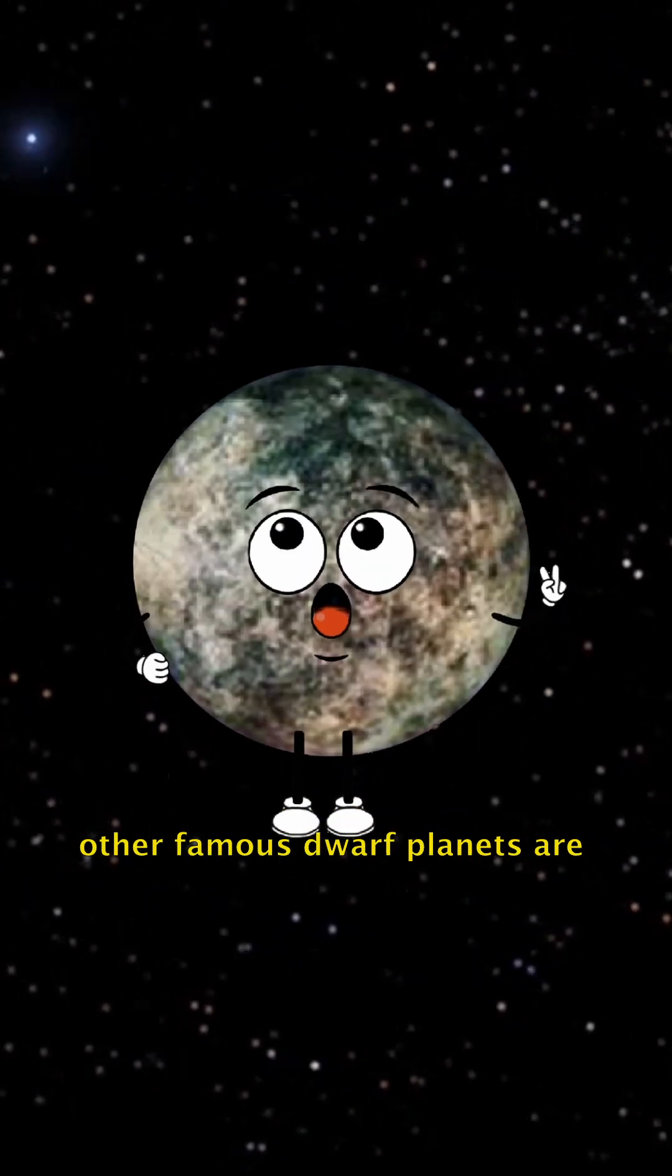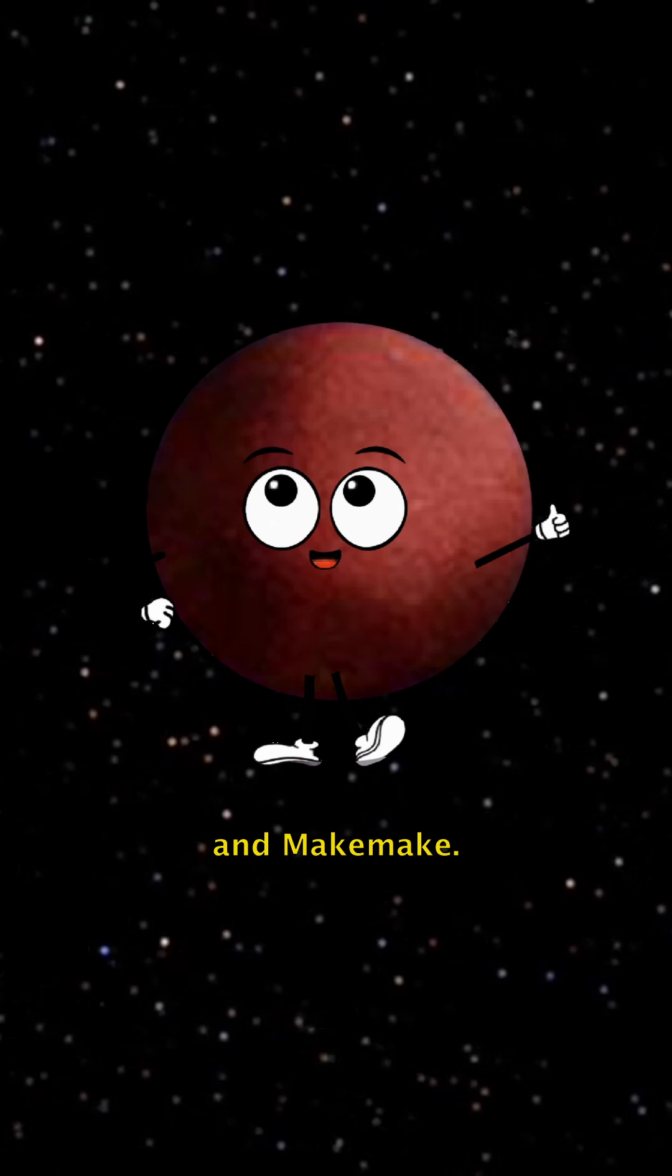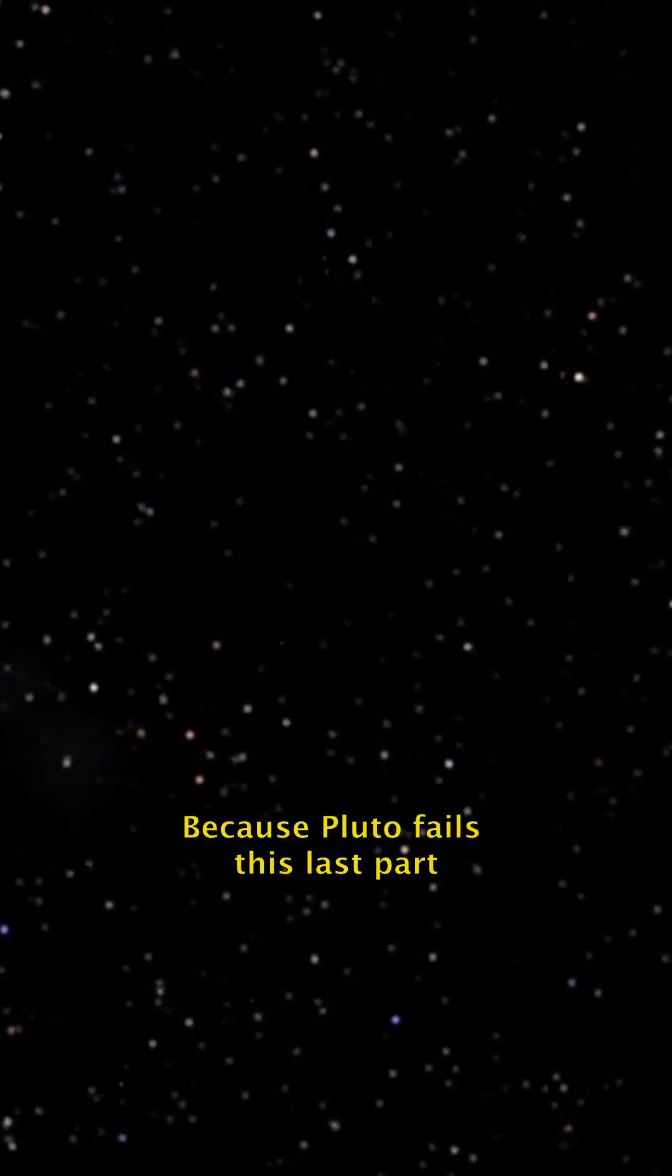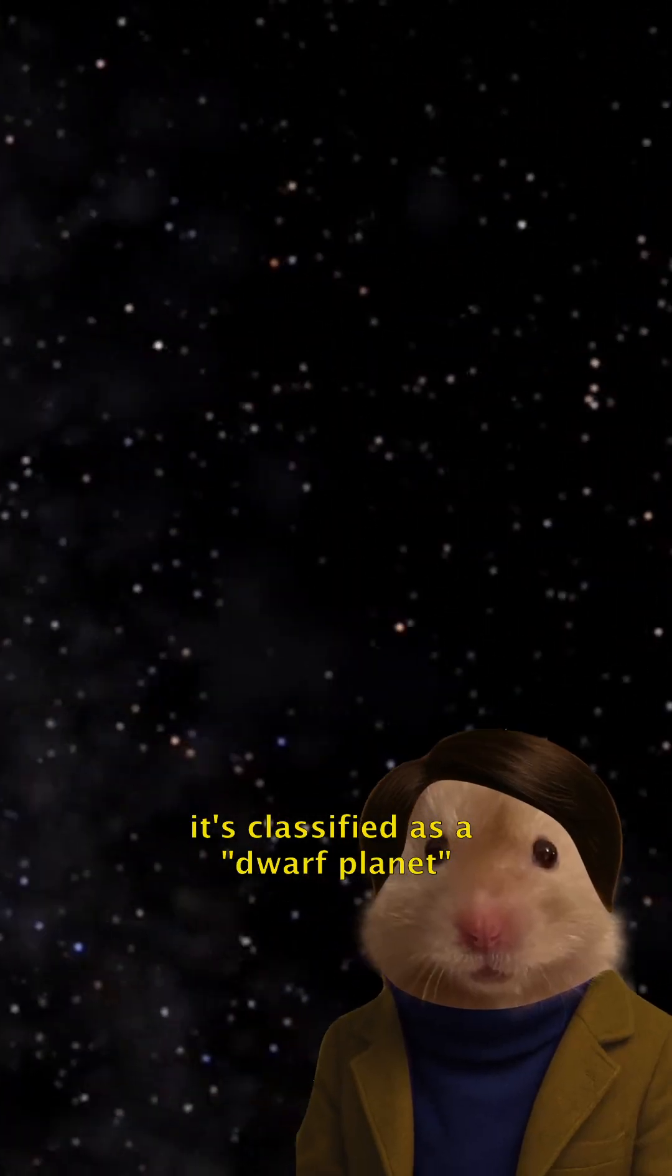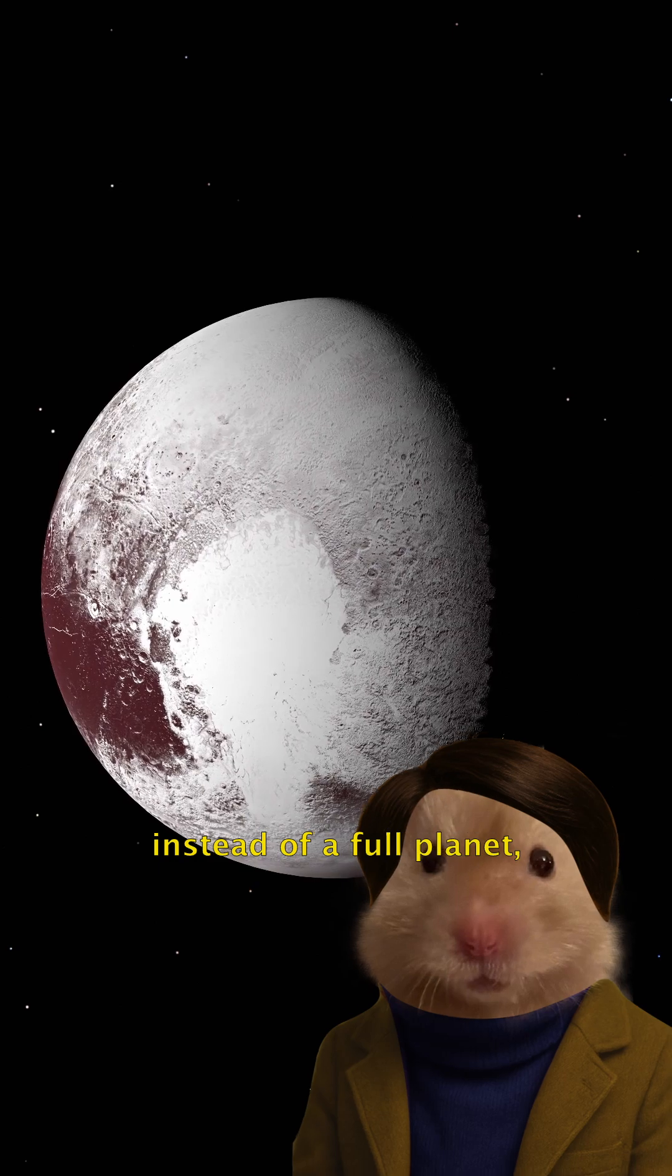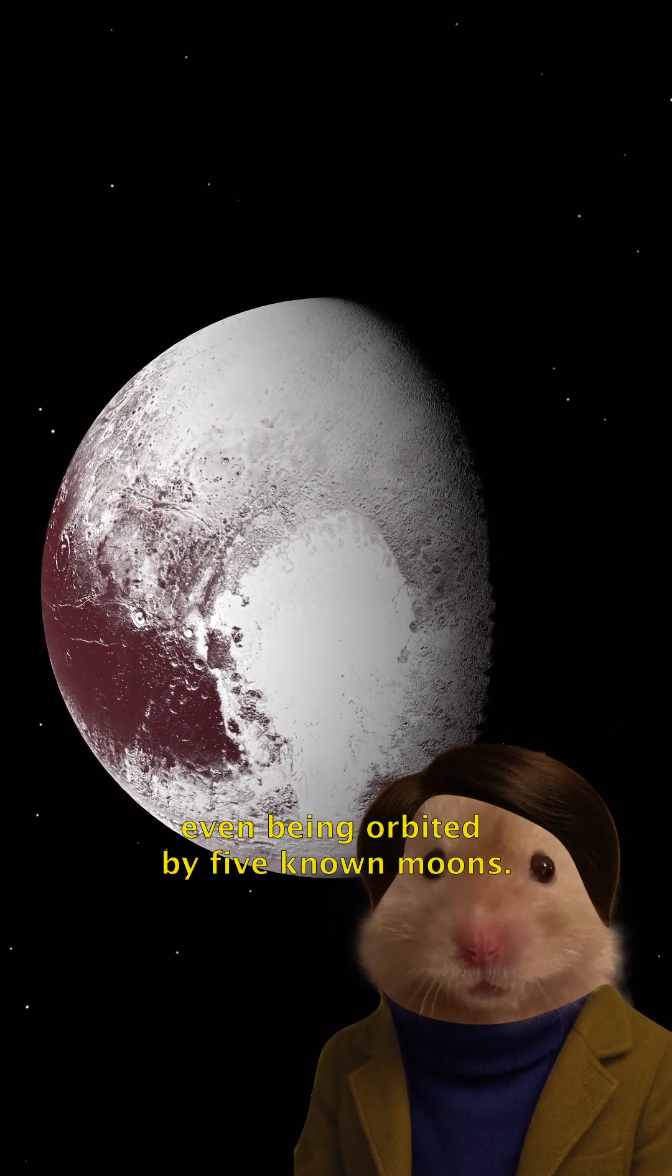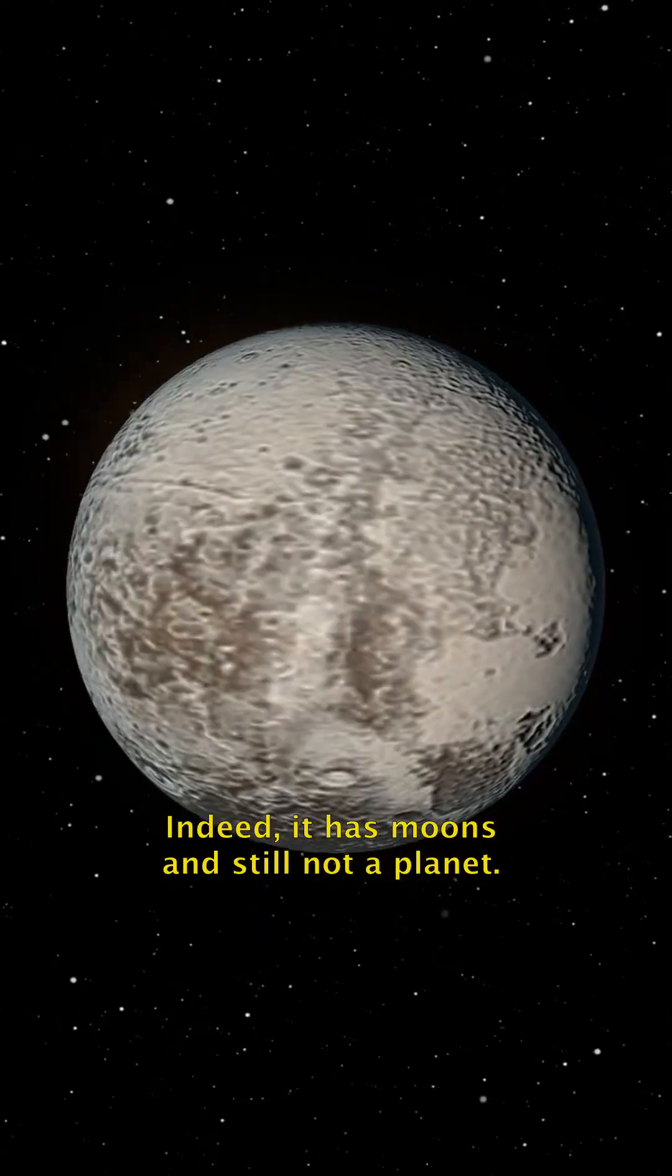Other famous dwarf planets are Eris, Humea, and Makemake. Because Pluto fails this last part, it's classified as a dwarf planet instead of a full planet, even being orbited by five known moons. Indeed, it has moons, and still not a planet.